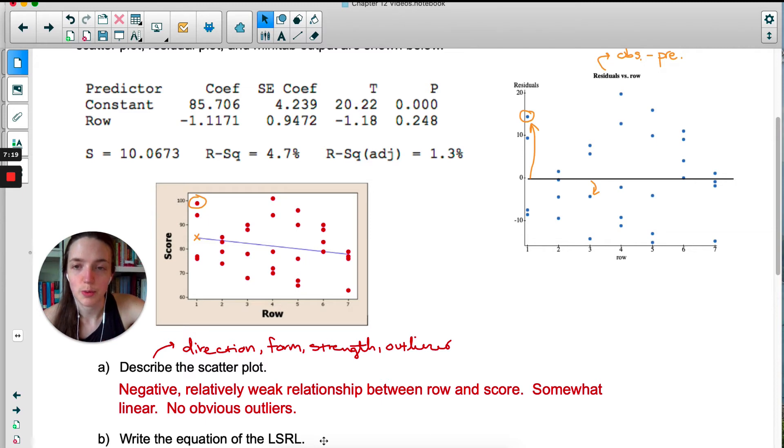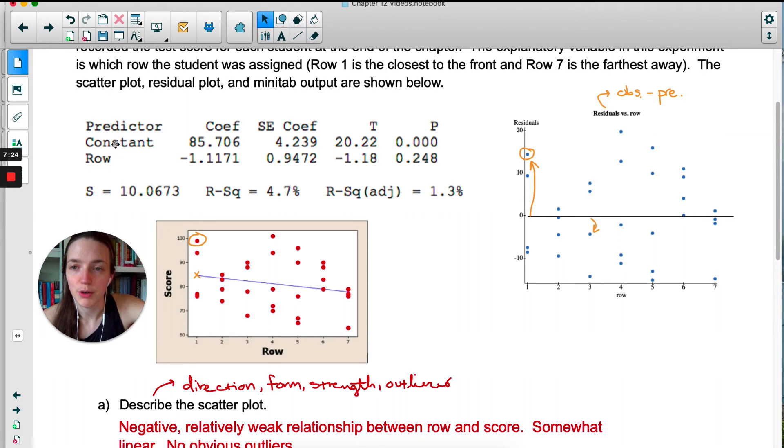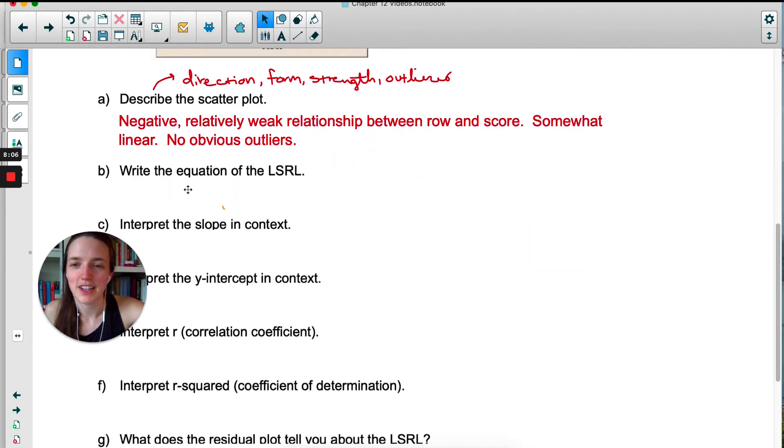For the equation of the least squares regression line, we get all of that from Minitab. So if you come up here, it's got on the left row and constant. Row was our x variable, so the coefficient of row, this number right here, is our slope. The coefficient of x, if you think about y equals mx plus b, the coefficient of x is the slope. The constant is our y-intercept. Once again, think about y equals mx plus b. b, the constant, is the y-intercept. Side note, if you didn't know which one was which, you could just look down here and be like, oh, it doesn't make sense for the slope to be 85. 85 looks like it must be the y-intercept. Negative one is probably the slope. When you're writing the equation of the line, remember that you have to define your variables. So I define my variables right in the equation, but if you used x and y, then somewhere off to the side you have to say x equals row, y equals score. And I did score hat here. Remember we use hat to show that it's the predicted score, not the actual score.